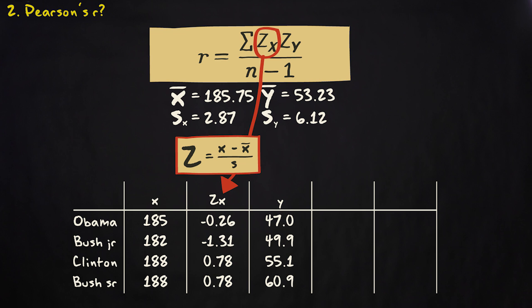We then repeat that for the dependent variable. 47 minus 53.23 divided by 6.11 makes minus 1.01964. And we do that for the other cases too.